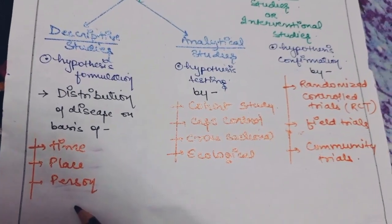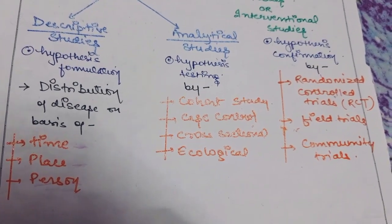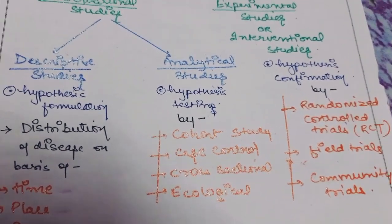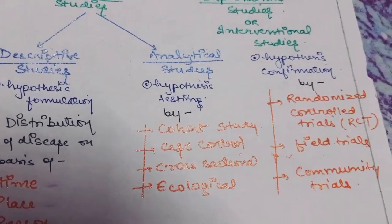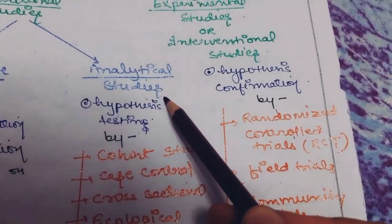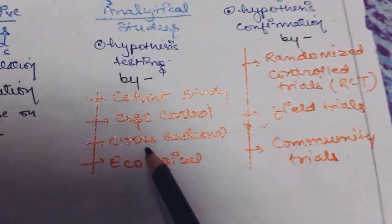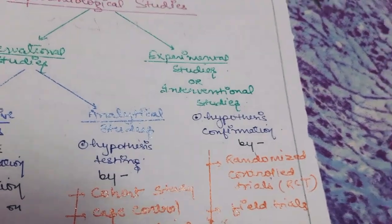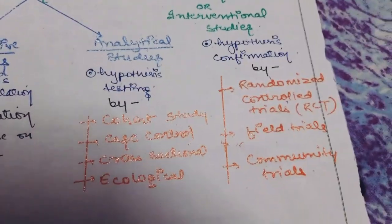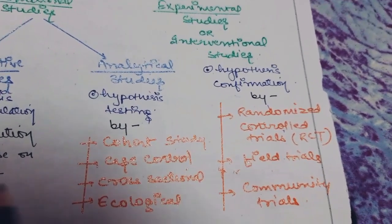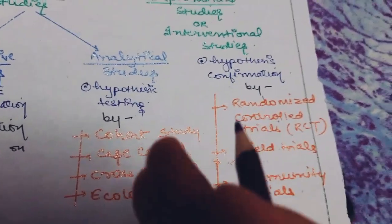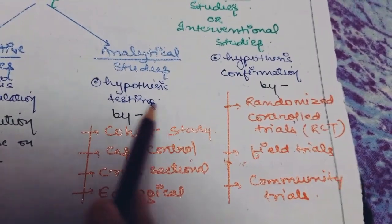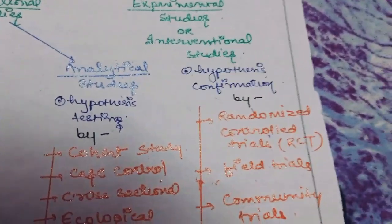After knowing the distribution of the disease we formulate a hypothesis — for example, lung cancer is caused by cigarette smoking. We suspect that cigarette smoking may be a risk factor of lung cancer. To test our hypothesis we do analytical studies, which include cohort study, case-control study, cross-sectional study, and ecological study. We take two groups — one who is smoking and one who is not — follow them, and see whether they develop lung cancer or not.